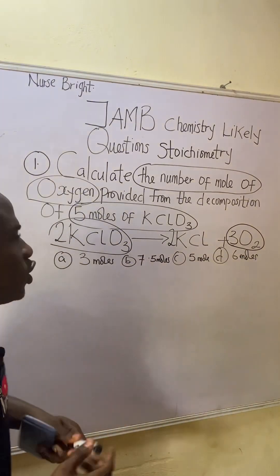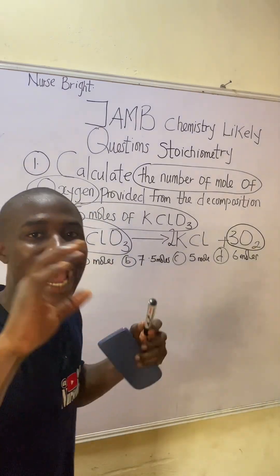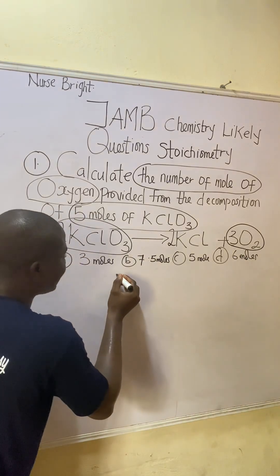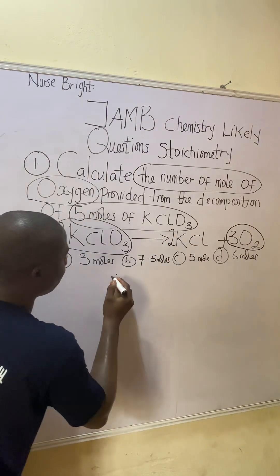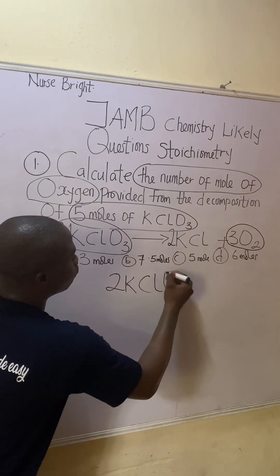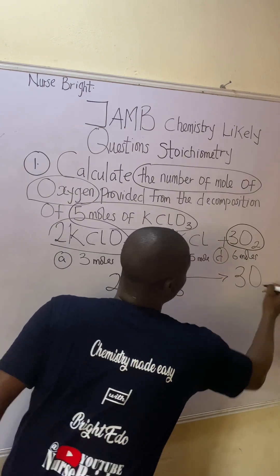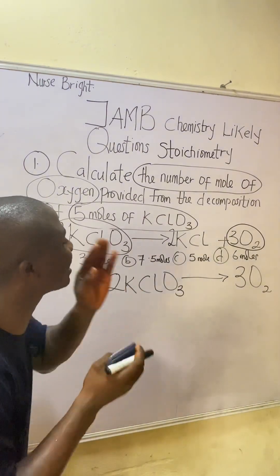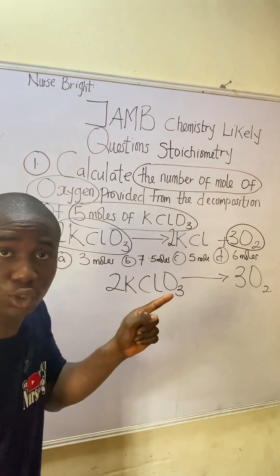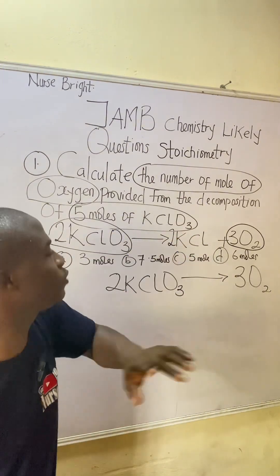Let's get back to this question. You can see what we've said so far — I want to bring down what we are interested in. This is how you should solve your own when you see questions on this aspect. We are dealing with these two: I'll bring them down the way they are written in the reaction — 2 KClO₃ gives 3 O₂. We have no business with the other species in the reaction.